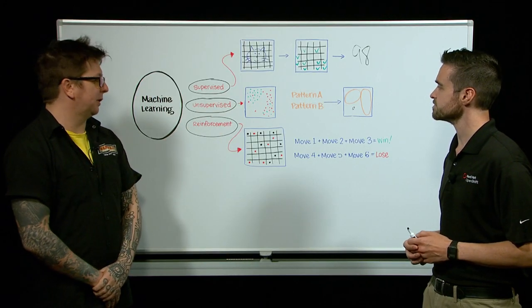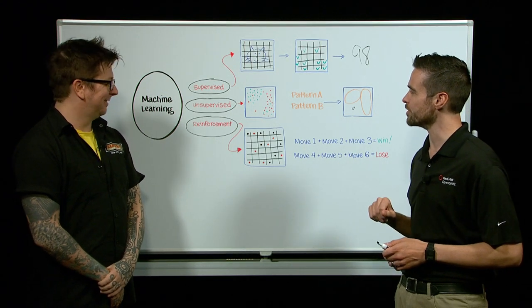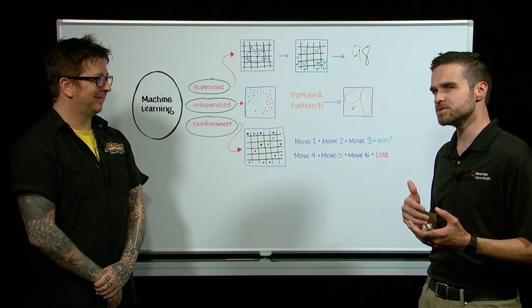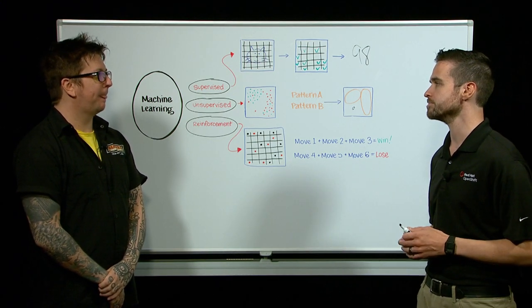Fantastic. Moving on to the last one, reinforcement learning. This looks like a chessboard. Can you talk to that? Absolutely. So reinforcement learning is a type of learning where a computer is able to adjust its own algorithm based on a known good or a known bad outcome. Excellent.